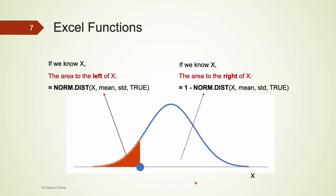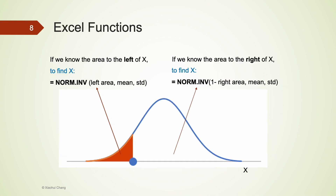To summarize the two Excel functions: if you know x and want the area to the left, use NORM.DIST. For the area to the right, first find the area to the left using NORM.DIST, then subtract from 1, since the total area under the bell curve is always 1. If you know the area to the left and want to find x, use NORM.INV. If you only know the area to the right, use NORM.INV with one minus the right area as the first argument.